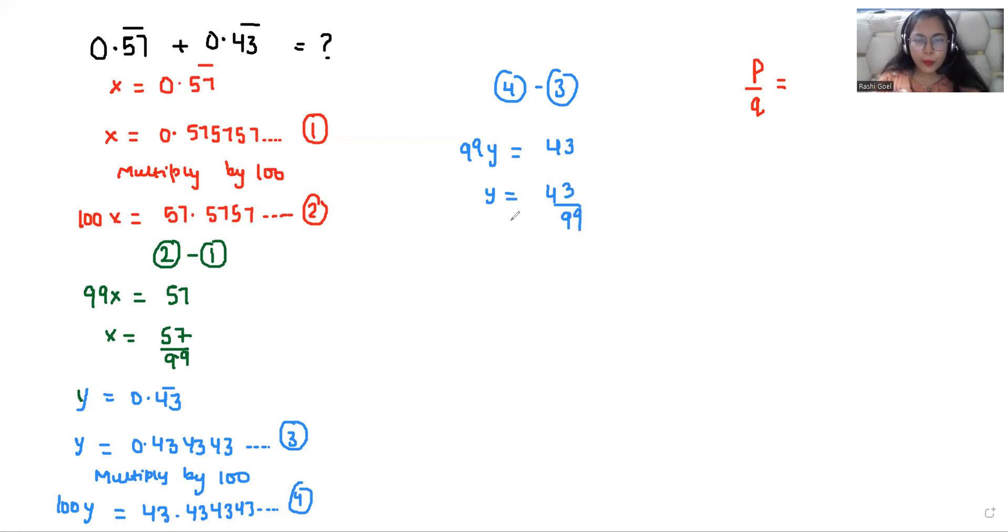If I put the value X plus Y equals 57 by 99 plus 43 by 99. So from here 57 plus 43 is 100 by 99. The value for this question is 100 by 99.